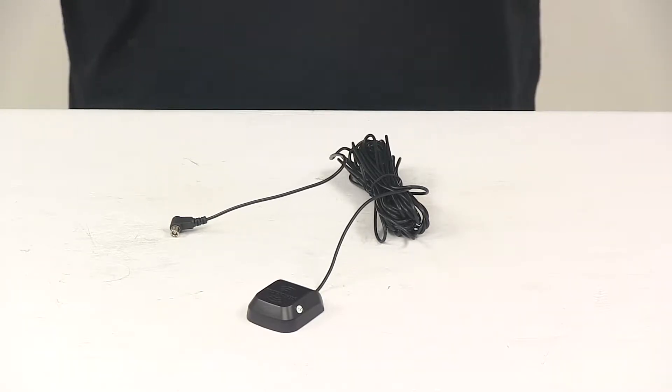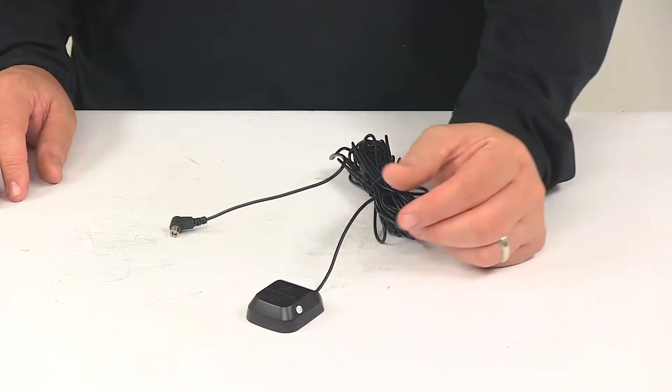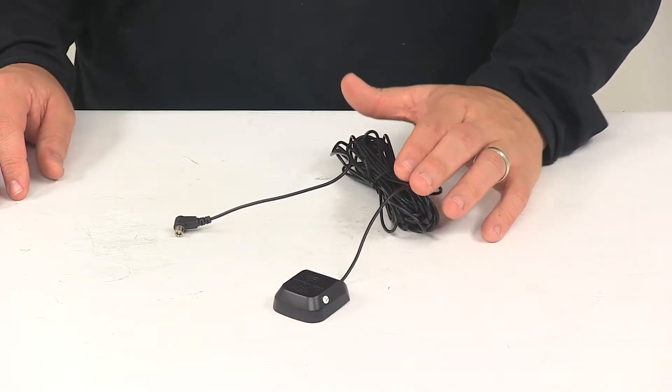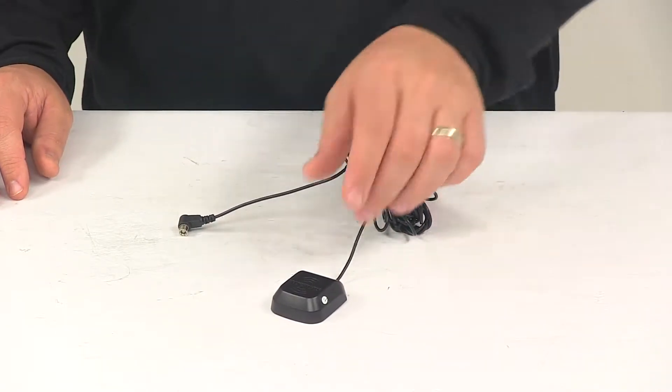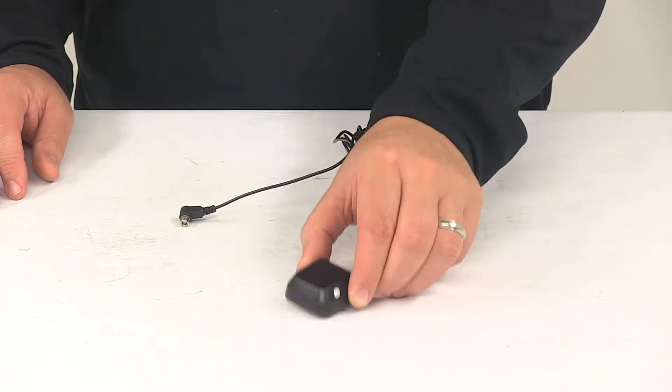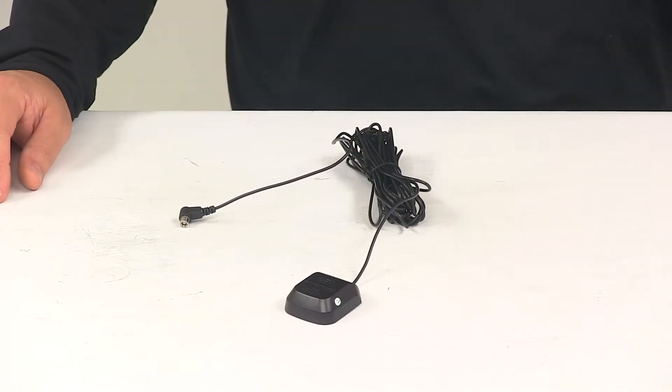Today we're going to be taking a look at the Sirius XM vehicle satellite radio antenna. This unit features a low profile and compact size, which allows the antenna to be placed almost anywhere on your vehicle to ensure optimal signal reception.